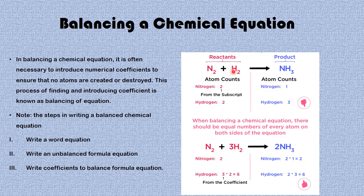As an example, we have nitrogen gas reacting with hydrogen gas to produce ammonia gas. The subscript 2 shows that we have two atoms of nitrogen reacting with two atoms of hydrogen to produce one molecule of ammonia gas. Looking at the reactants, the number of nitrogen atoms is 2, but on the product side the number of nitrogen atoms is 1. On the reactant side the number of hydrogen atoms is 2, while on the product side it is 3. This shows that this formula is not balanced.